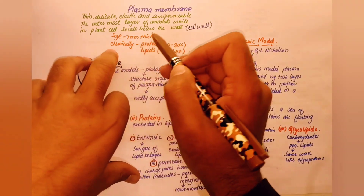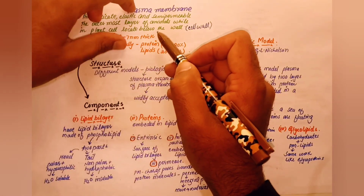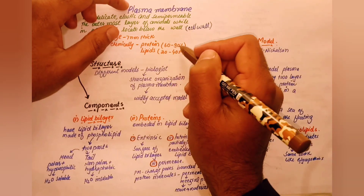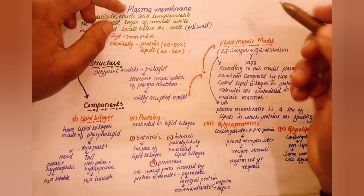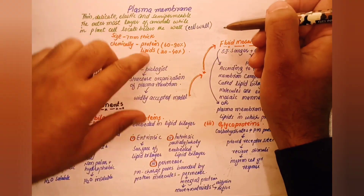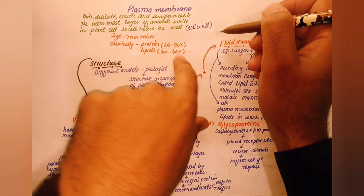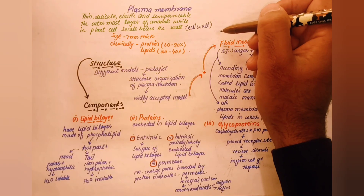Chemically, the plasma membrane is composed of approximately 60% protein and 40% lipids.